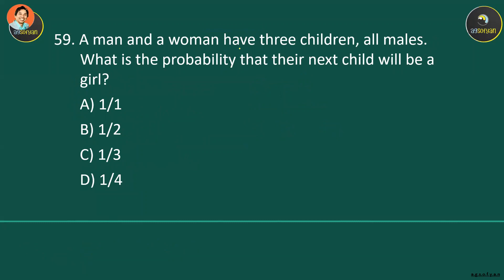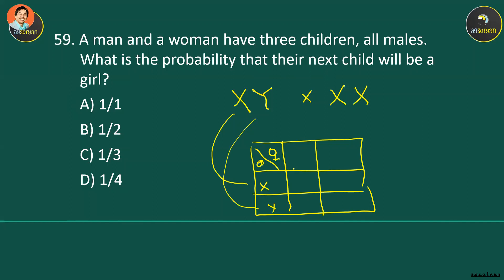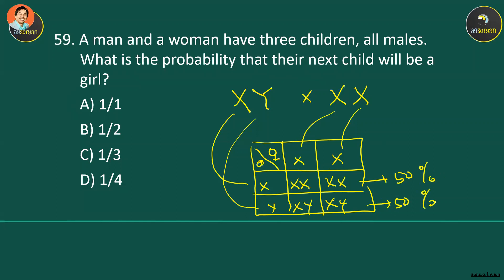A man and woman have three children, all males. What is the probability that the next child will be female? The male is XY and female is XX. Using a Punnett square: the result is always 50% daughters and 50% sons. Previous children don't affect this probability — it's always 50%, or one-half.